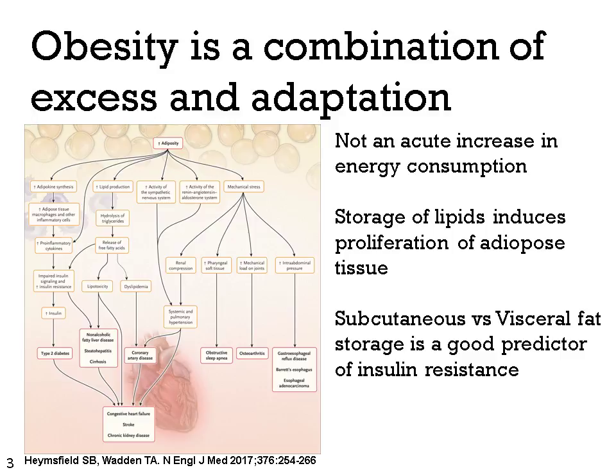On the left you see a chart of exactly how increased adiposity affects downstream pathways, eventually leading to negative events such as congestive heart failure, stroke, and chronic kidney disease. You do not need to know everything in this chart — it is just an example of what increased adiposity can do.